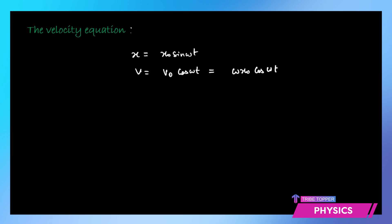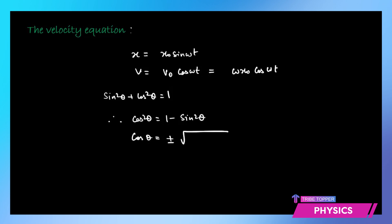Now, if we apply the trigonometric identity which you have learned — sin²θ + cos²θ = 1 — then cos²θ can be written as 1 − sin²θ, or if it is cos θ, then that would be written as ±√(1 − sin²θ).